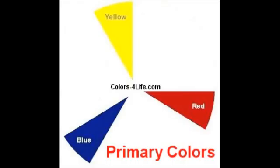Today we are learning about primary, secondary, and tertiary colors. There are three primary colors: red, yellow, and blue, and they are the purest colors on the color wheel chart. They are not made by mixing any other color, and they have no black or white in them.